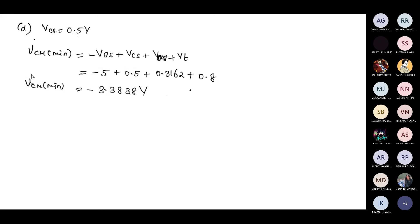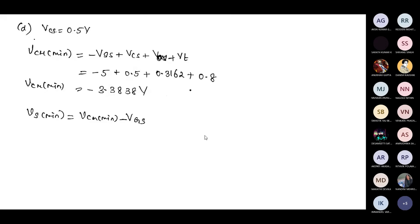Next, we calculate VS min using VS equals VCM minus VGS. When finding the minimum value of VS, we use the minimum value of VCM just obtained. Substituting VCM min of minus 3.38 volts into this relation gives VS min equal to minus 4.5 volts.